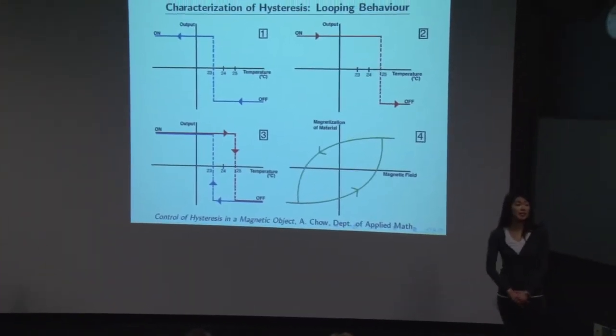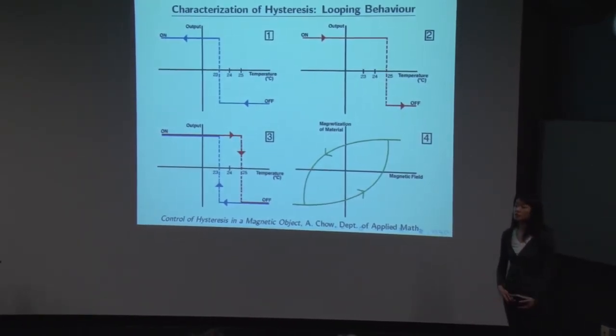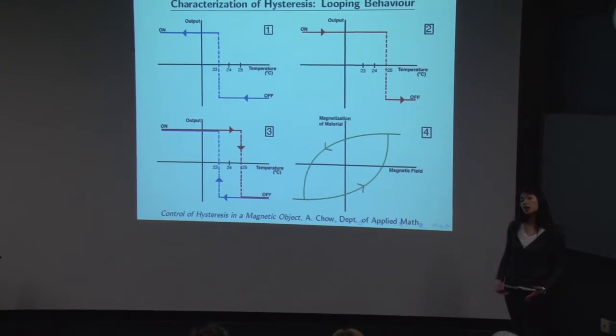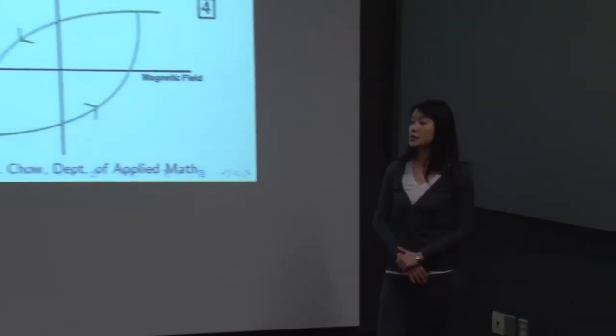Hysteresis is a phenomenon that occurs in nature and man-made processes. There's actually no precise definition for hysteresis, but rather it's often characterized by a looping behavior. And the best way for me to explain what I mean by this is with a simple example that exhibits hysteresis.